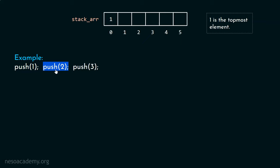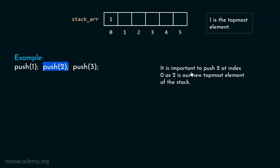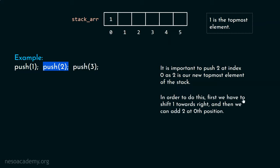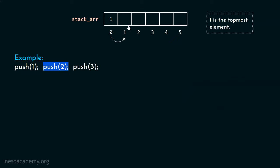You must understand the logic behind this new push function. After pushing element one, we want to push element two. Before pushing two, we have to create room — we must shift element one towards the right. It is important to push two at index zero because this is going to be the new topmost element. So first we shift one towards right, then we insert two at the zeroth position. We must not replace one by two directly.